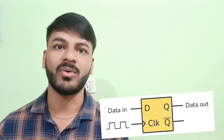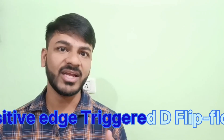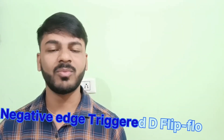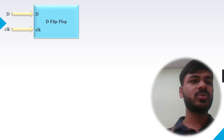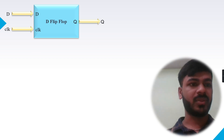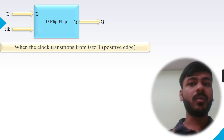In this video, we are going to discuss only the D flip-flop. The D flip-flop is categorized into two types: positive edge sensitive D flip-flop and negative edge sensitive D flip-flop. Let's discuss the positive edge triggered D flip-flop first. It has two inputs — input D and clock — and one output, Q.